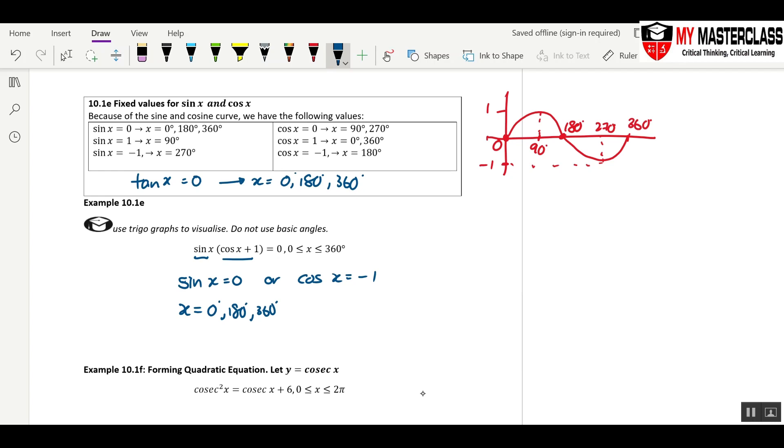As well as if cosine x equals to negative 1, if you cannot visualize, then let's draw out. Oh, negative 1 is here. This one is 180. So x equals to 180. 180 is a repeated value. So therefore, the final answer is x equals to 0, 180, as well as 360.